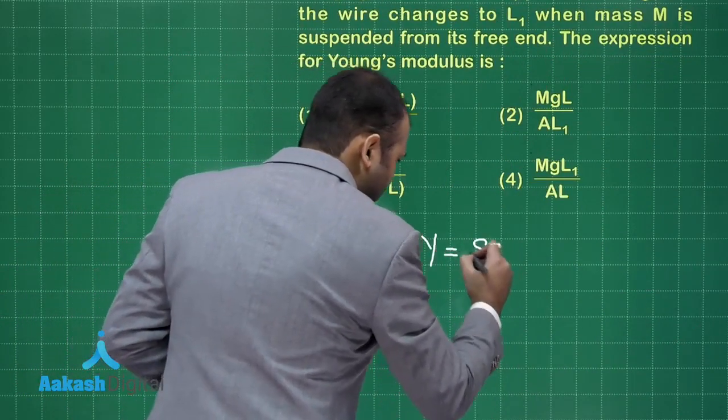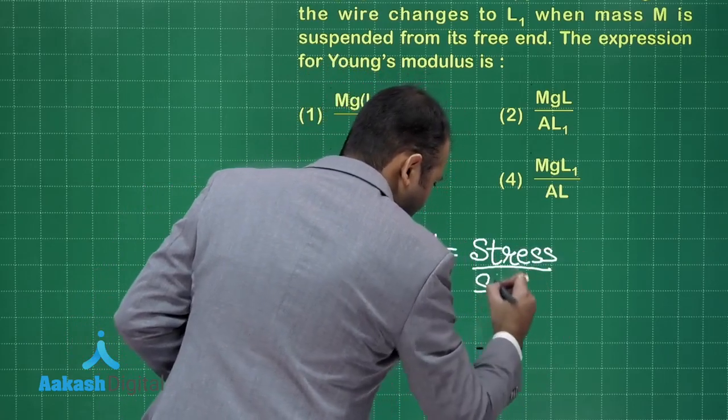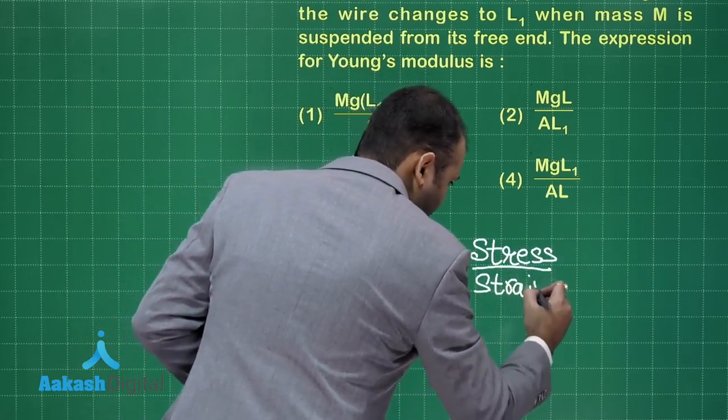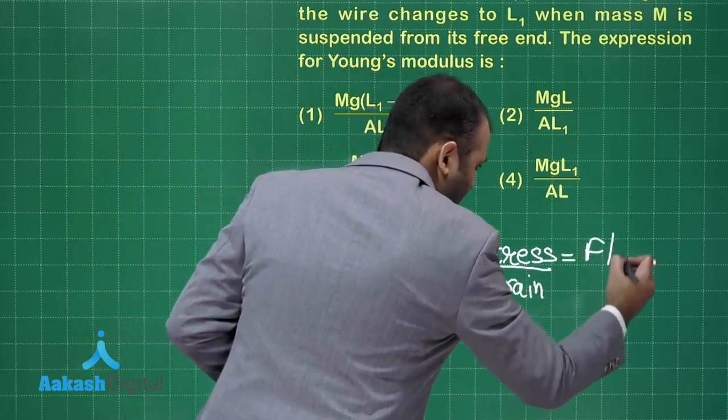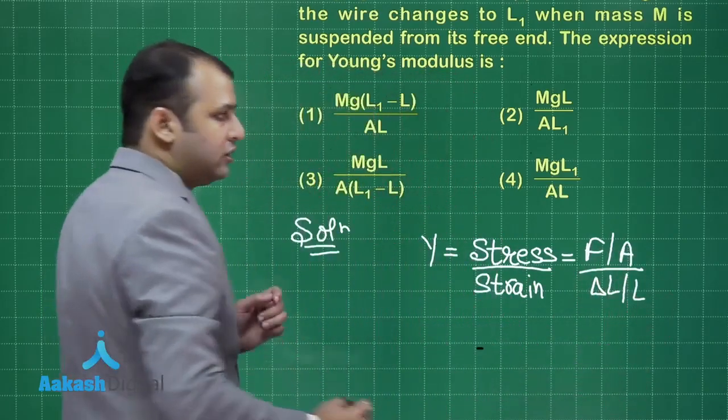As per the formula, Young's modulus is given by stress by strain, right? Now here stress would be force upon area of cross section divided by change of length divided by original length, right?